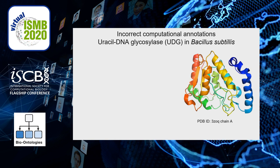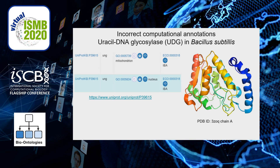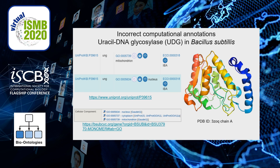Uracil DNA glycosylase, or UDG, is a very well-studied enzyme for repairing DNA of the cell. In Bacillus, this protein has a solved structure shown on the right. Despite being so well characterized, its UniProt entry on the upper left incorrectly assigns the functions mitochondrion and nucleus, both of which do not exist for Bacillus bacteria. Similarly, in B. subtilis, a database specific for the Bacillus genome also incorrectly annotates this protein as nucleus and mitochondrion. The UniProt annotation has the IBA code.